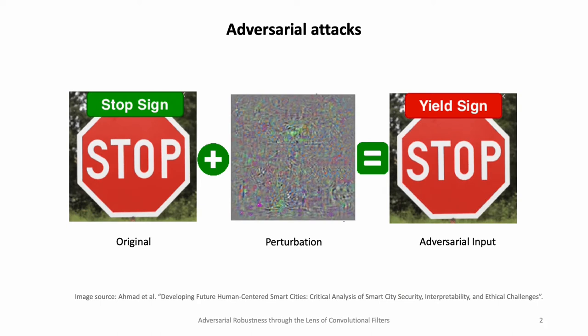In case you're unfamiliar with adversarial attacks, I want to very briefly motivate them. You can train computer vision models to accurately predict certain objects, for example street signs, and then test them on unseen data. If you've done it right, they will work very well. But they are very sensitive to distribution shifts. You can apply a perturbation — a noise pattern on top of a stop sign — and it will fool the network into thinking it's a yield sign, even though the perturbation is barely visible to the human eye.